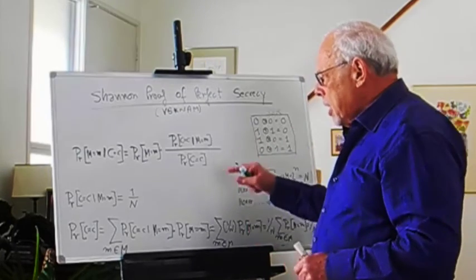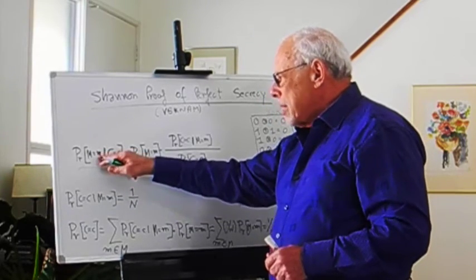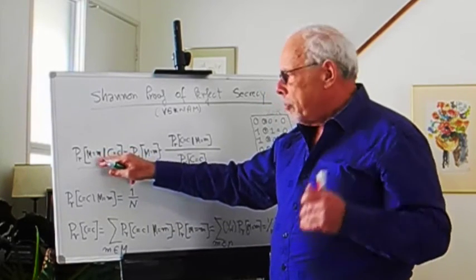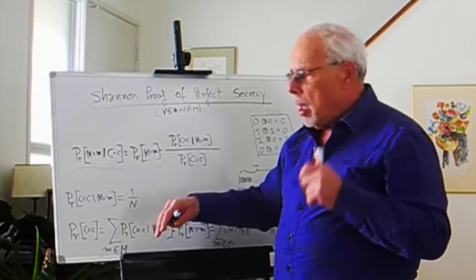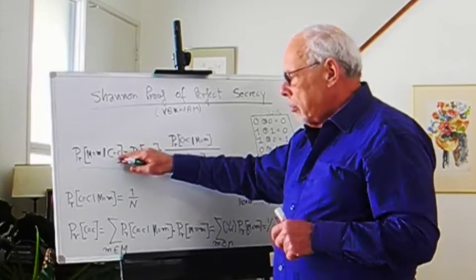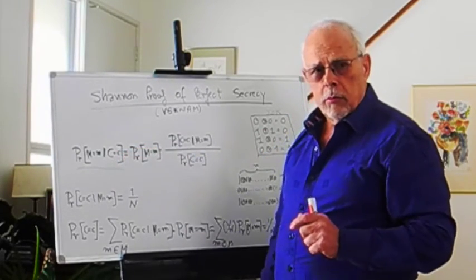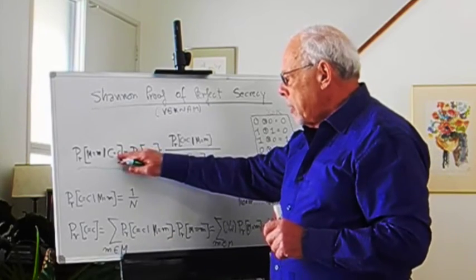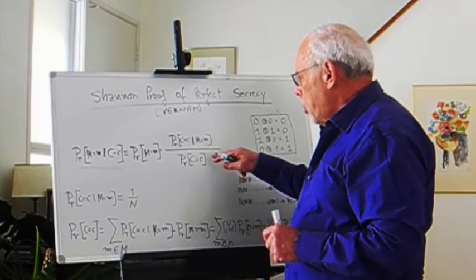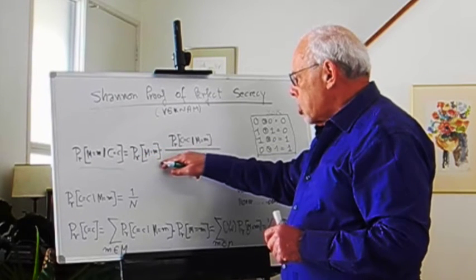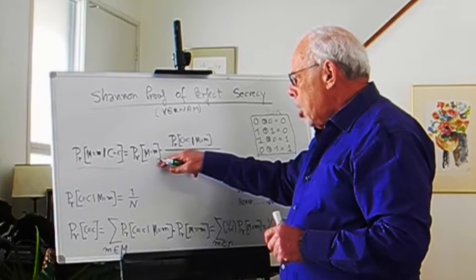What it says now is very interesting. It says that the probability for the message that was encrypted to be m, given that the ciphertext that the user sent out is c, equals this. Now what do we have here? We have this expression.